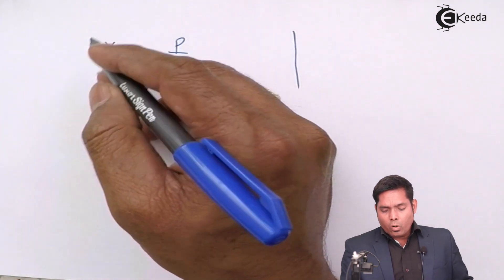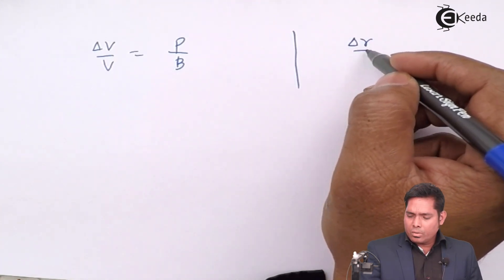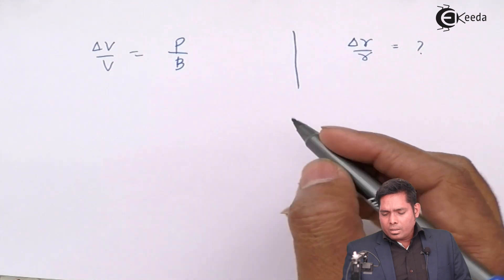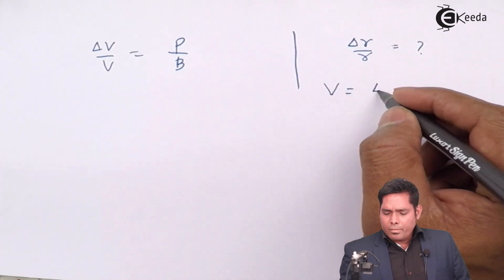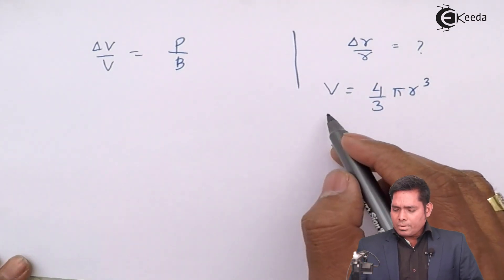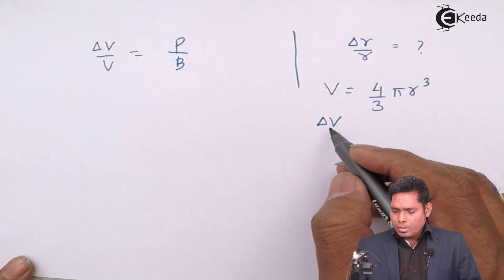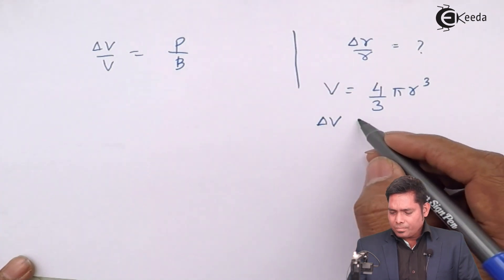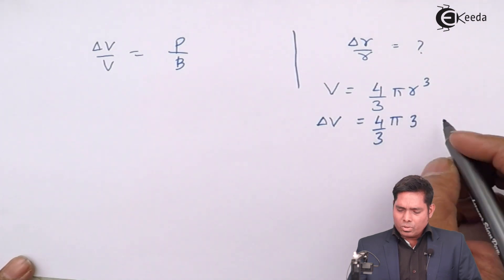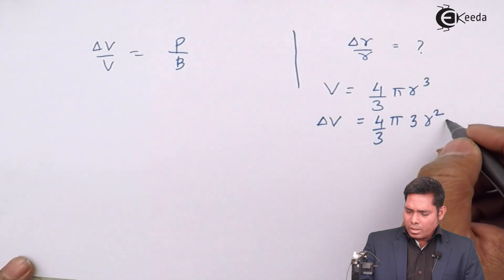We are not interested in the fractional change in volume alone. We need delta R over R. The volume of the sphere is given by V = (4/3)π R³. If I differentiate that, the change in volume dV equals (4/3)π times 3R² times delta R.